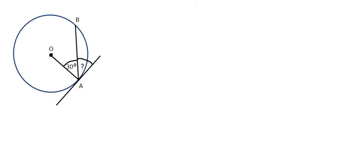So here we have a tangent and we have a radius. And so when that happens, we know that the angle between those two has to be 90 degrees.